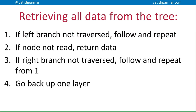You can use an adaptation of this technique to retrieve all of the data from the tree in one go. When you iterate through an array to return all the data, you need to do a similar thing with the tree. If you haven't traversed the left branch, you follow it and keep going down the left branch until you hit the terminal node. If you haven't read that node, you read it and return the data, then look for a right branch. If there's a right branch, follow it and keep going down the left branches again until you hit the bottom, then go back up a layer, check that branch, and repeat.